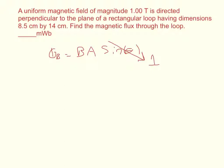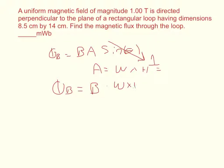We can define the area as width times height. The dimensions are given in centimeters, so make sure you convert 8.5 cm and 14 cm into 0.085 m and 0.14 m. Then substitute to get the final expression: magnetic flux equals the magnetic field times width times height times sine of theta, which is 1.